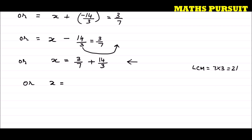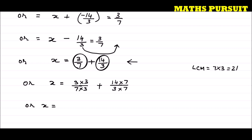So let us make the denominator 21 for both 3 upon 7 and 14 upon 3. For 3 upon 7, if I multiply the denominator with 3 I get 21, so I also multiply 3 to the numerator. Similarly, for 14 upon 3, I multiply 7 to both numerator and denominator to get 21. So x is equal to 9 upon 21 plus 98 upon 21.